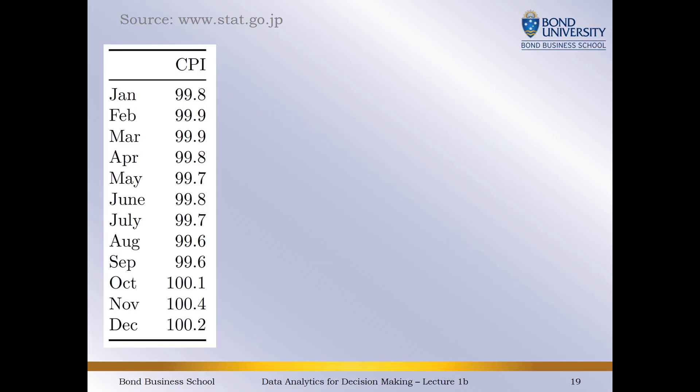Let's look at consumer price index, which, depending on if you've done economics already, you'll know what that means — how expensive products are to consumers, the general products. This is sourced from stat.go.jp. Actual data: 2016 seasonally adjusted CPI for Japan. The 100 reference level is 2015. It's relatively stable for the first nine months, slightly cheaper then slightly more expensive. But looking at this table, was there a trend? Is there not? It's hard to tell.